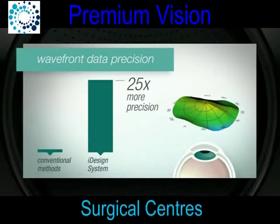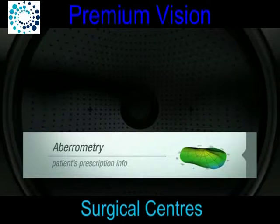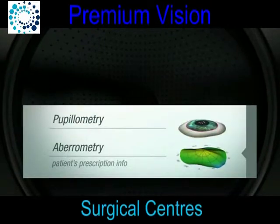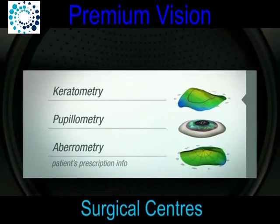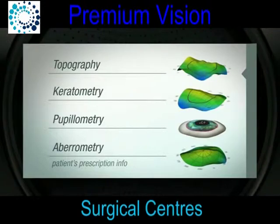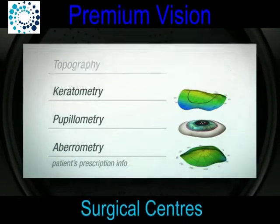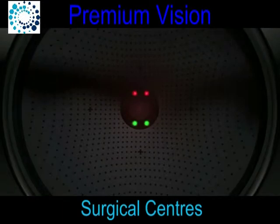In addition to determining a patient's prescription information, the iDesign system measures pupil size in different lighting conditions, curvature of the cornea called keratometry, and the overall topography or shape of the front of the eye. All of these measurements are mapped by the iDesign system in mere seconds and in a single sitting.